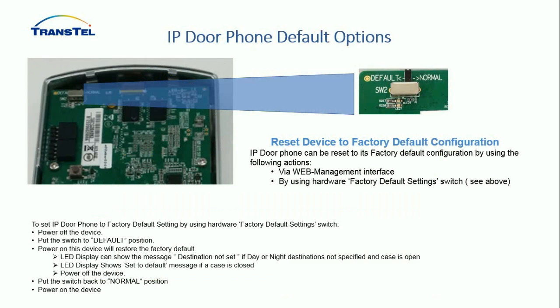There is a small switch at the top of the phone labelled 'default' and 'normal' which allows you to go into a factory default scenario. This is not a switch used every day — most defaulting is done via software. However, if the phone has been programmed, nobody knows the password, and you need to do a factory default, this is the hardware factory default switch. It's straightforward when following the instructions in the technical manual.